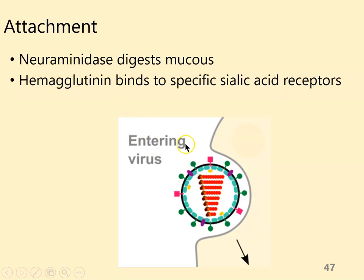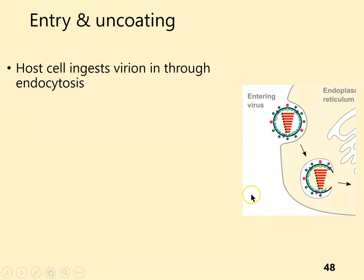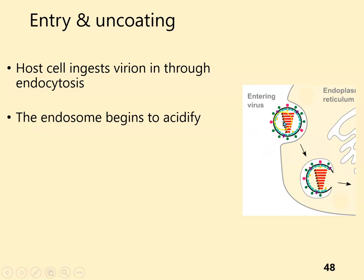First we look at attachment. This is where neuraminidase helps get through the mucus. The hemagglutinin then actually binds the surface receptors, and the host cell ingests the whole virion through receptor-mediated endocytosis. That puts it inside an endosome, or inside a vesicle — whenever we bring something in through endocytosis, it's inside a vesicle.